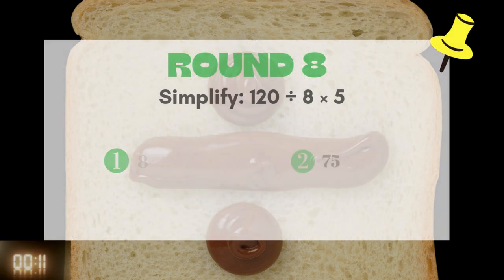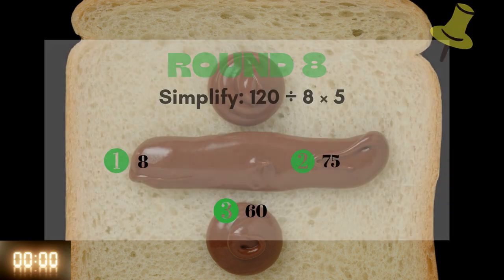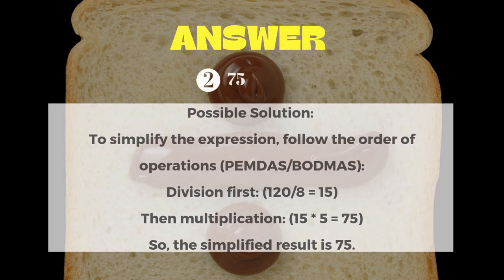Round 8: Simplify 120 divided by 8 times 5. The answer is 75.